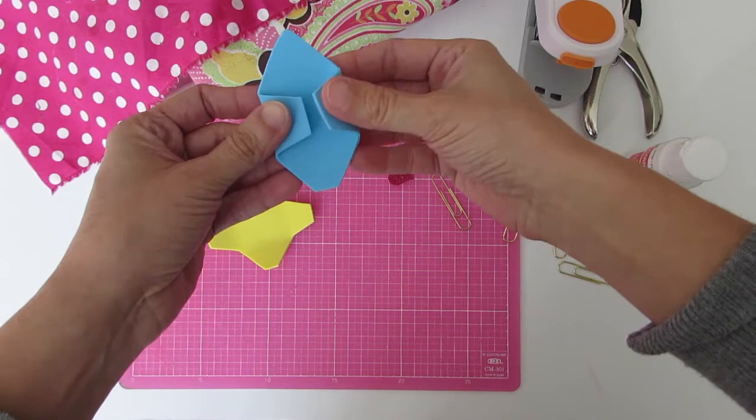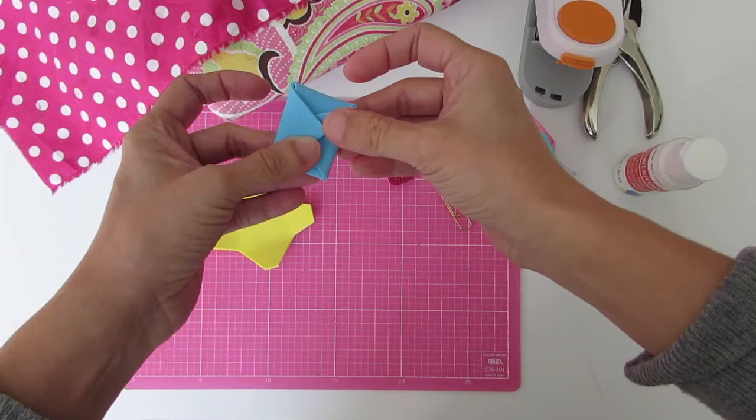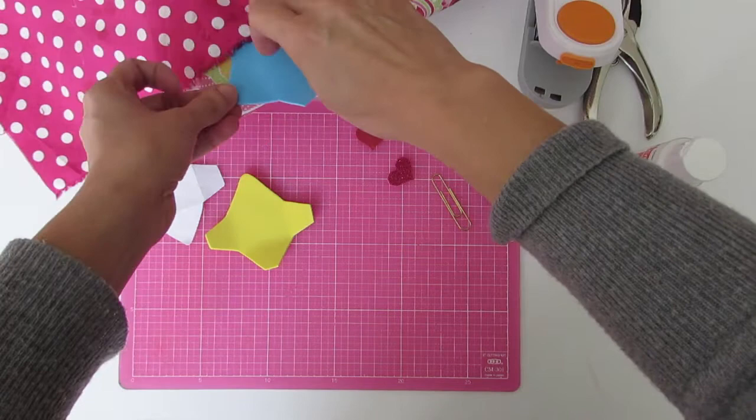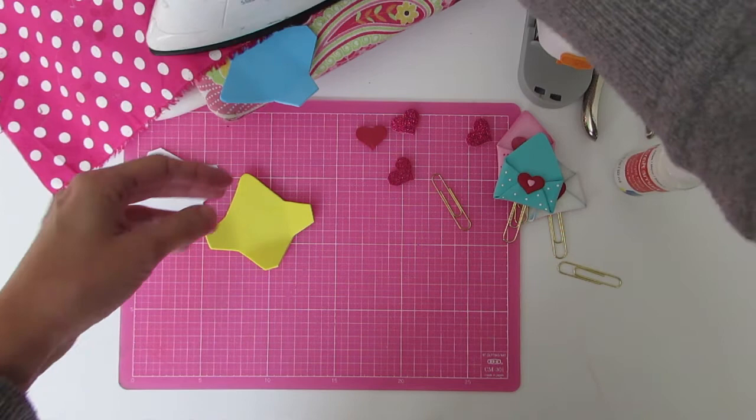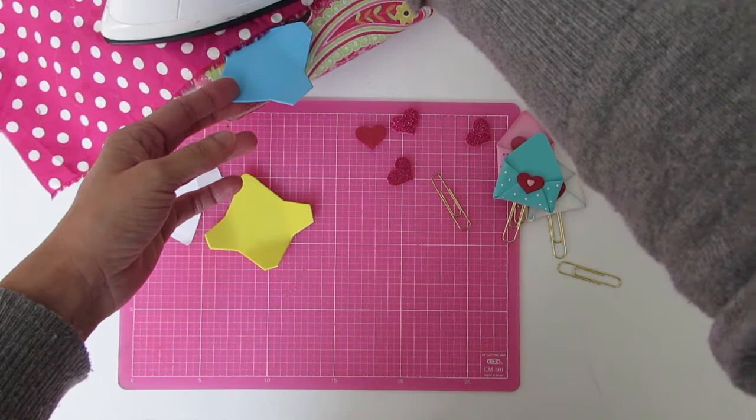So put your foam sheet on your iron table and cover it with a piece of fabric. You will do one flap at a time. Remember the iron has to be in a cotton setting. Quickly iron it and gently place the flap over.